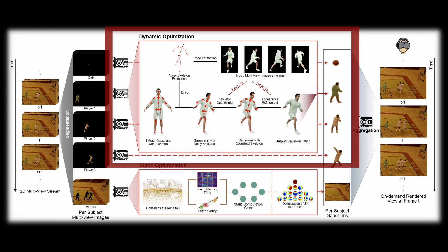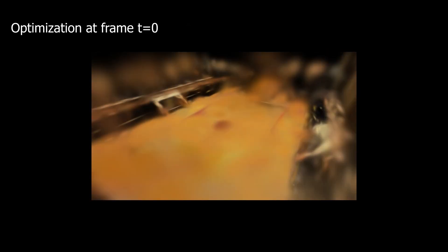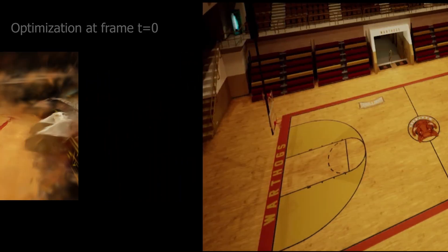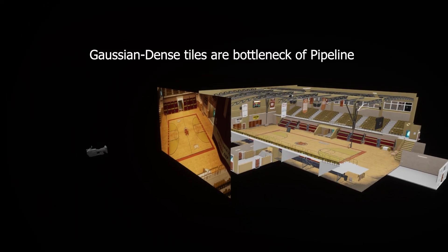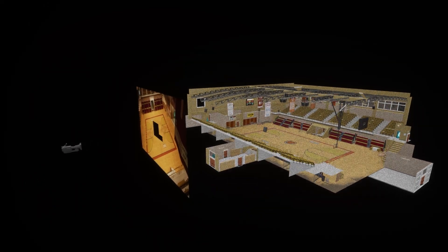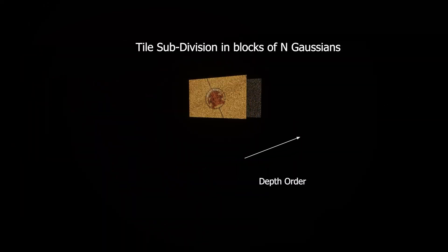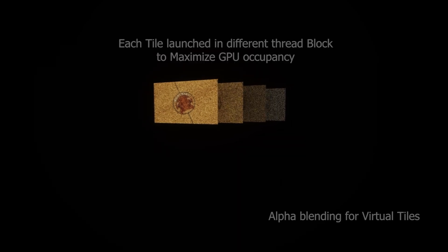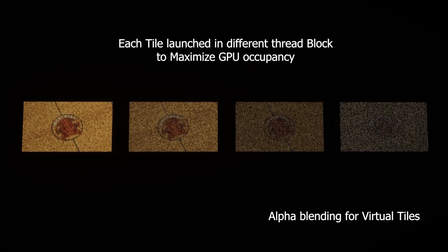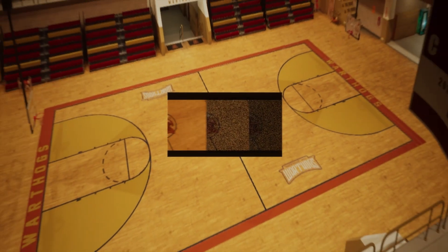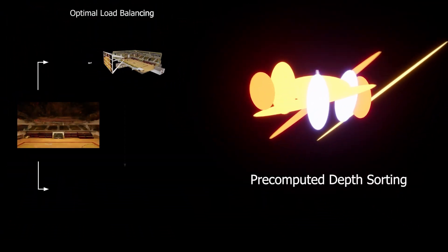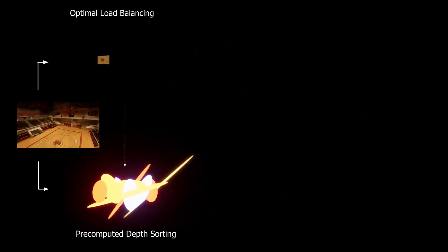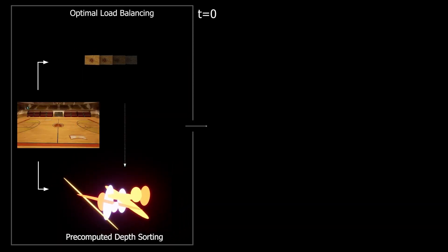We first review our solution for static environments. In frame 0, we begin with standard 3D Gaussian Splatting to optimize the geometry and establish a precise representation of the scene. Tiles with high density of Gaussians emerge as the primary bottleneck in the rasterization pipeline, significantly impacting performance. To address this, we subdivide tiles into blocks containing a maximum of N ordered Gaussians, ensuring efficient partitioning. To maximize GPU occupation, each subtile is processed independently by a separate thread block and alpha blending is performed at the tile level for seamless rendering.